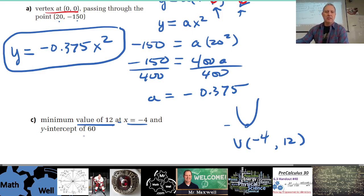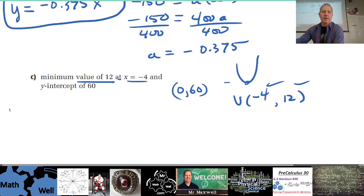And the y-intercept is 60, so that is there's a point (0, 60). So again, from vertex graphing form, you've got your vertex, plug that in. So y equals a times (x + 4), because it's minus a negative 4 squared, plus 12.